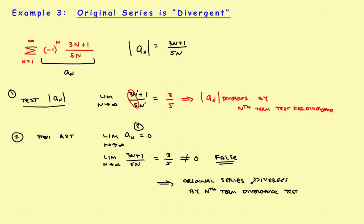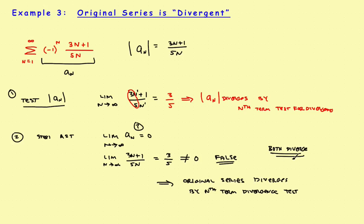So in this case, the original series diverged and the absolute value series diverged — both of them diverged. To summarize: if both converge, they are absolutely convergent; if only the original converges, it's conditionally convergent; and if both diverge, they are just both divergent.